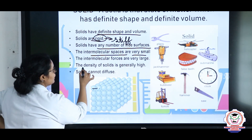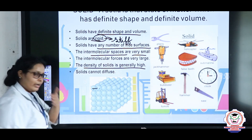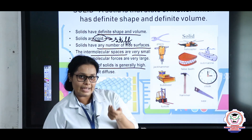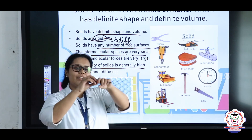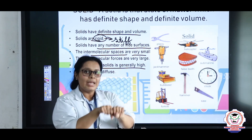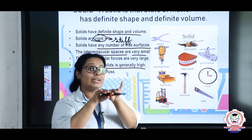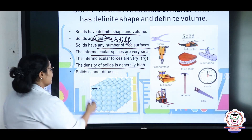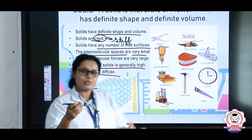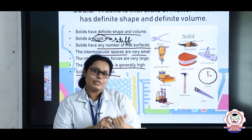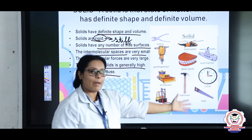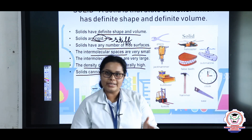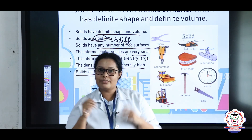The density of solids is generally high. Because solids have a particular shape and cannot be compressed, density will automatically be high. Also, a solid into solid cannot diffuse. I hope students you have understood what is a solid and the kinetic theory discussed here.